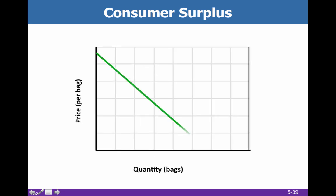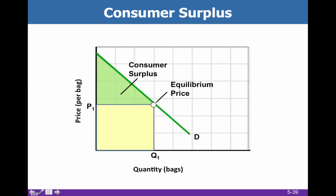Let's see what it looks like graphically. Consumer surplus is the area underneath the demand curve but above the equilibrium price. This right here is consumer surplus, and this right here is P times Q — we know that P times Q equals total revenue, so this yellow area is our total revenue square.